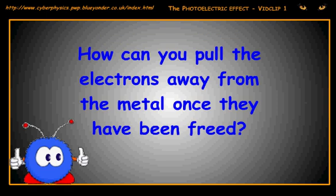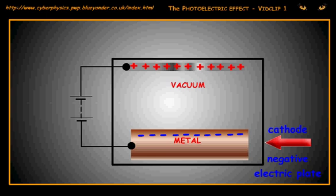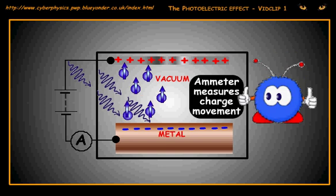How can you pull the electrons away from the metal once they have been freed? You can do this by making the metal target the cathode of a set of electric plates. Once released, the electrons are attracted to the positive plate and provide a current through the photoelectric tube.